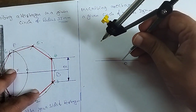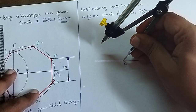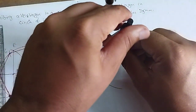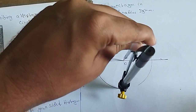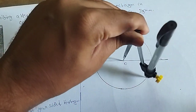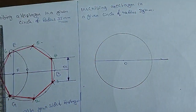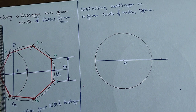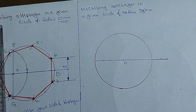With O as center, draw a circle. So we are going to draw eight number of equal parts. First of all, we are going to draw a circle with a diameter.